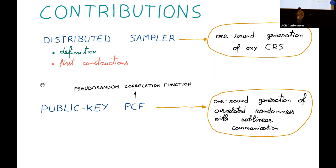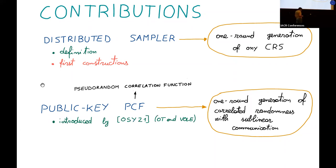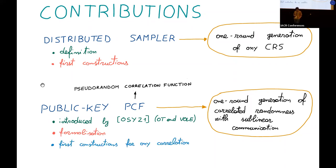In the paper, we present definitions of distributed samplers under different security flavors, and then we present the first constructions of this type, building them from polynomially secure IO. The second contribution is the study of public key PCFs. PCF stands for pseudorandom correlation function — basically n-party protocols that generate large amounts of correlated material with sublinear communication in the size of the outputs and only one round of communication. The primitive was introduced by Orlandi et al. at EuroCrypt 2021, but their paper presents constructions that work only for OT and vector-OLE correlation. In this work, we formalize the notion of public key PCFs and present the first constructions that work for any correlation, built from obfuscation.